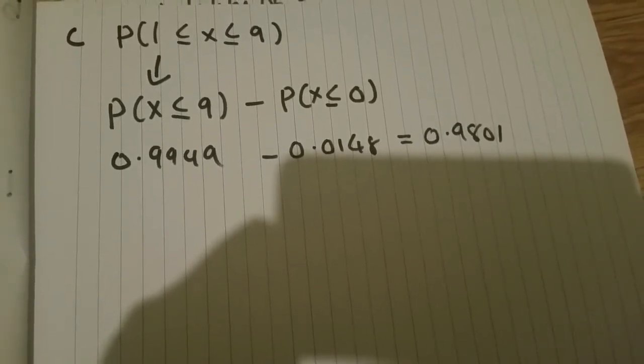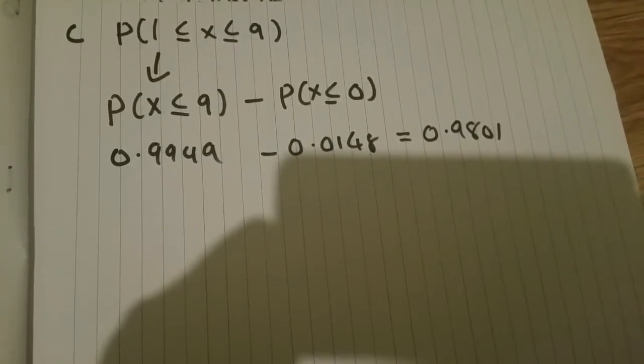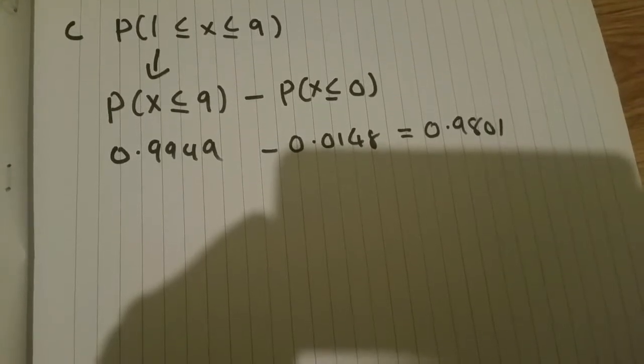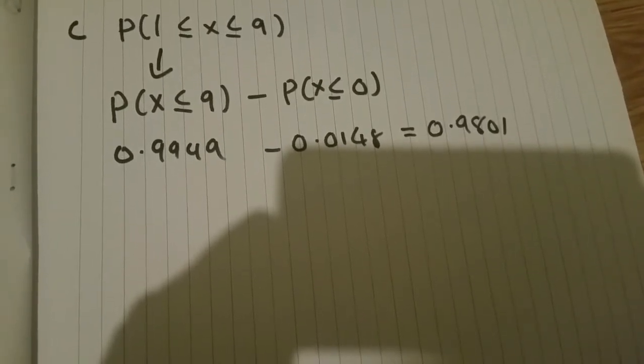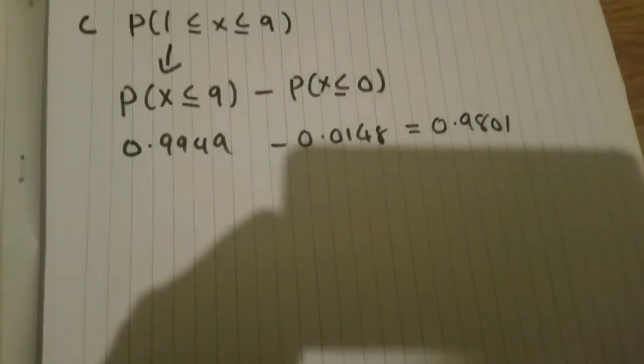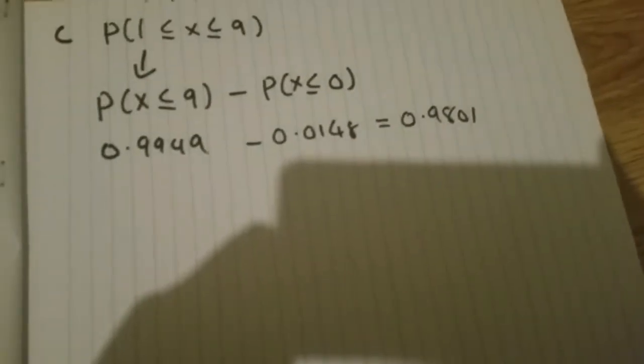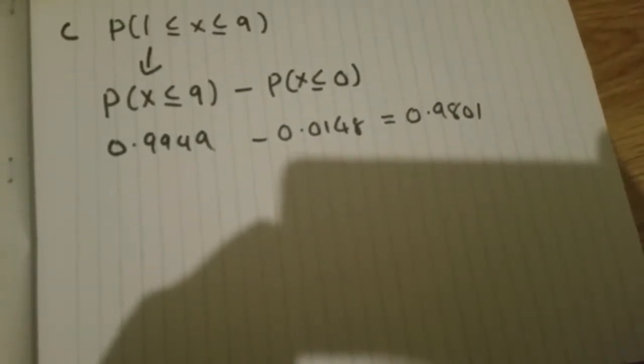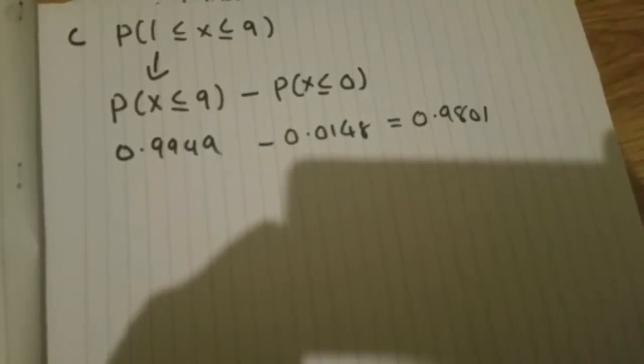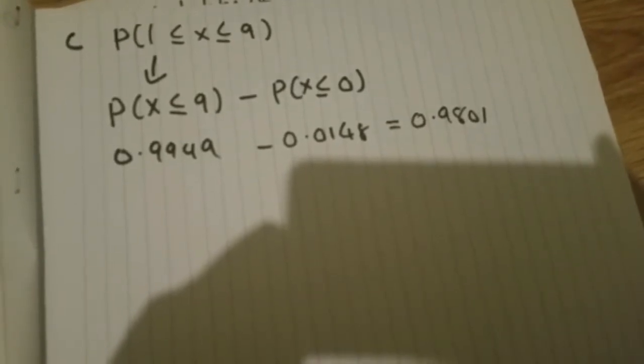That inequality above is all the probabilities of 1, 2, 3, 4, 5, 6, 7, 8, and 9. We want to keep 1 inclusive in there, so we take the probability of 9 or less and subtract the probability of 0. That will give us the answer we're looking for. If we did the probability of 1, we'd be removing something that should rightly be inside the inequality. So 0.9949 - 0.0148 = 0.9801.